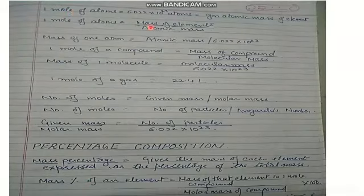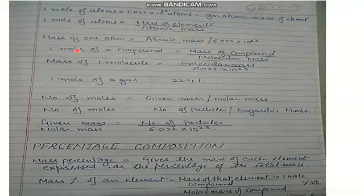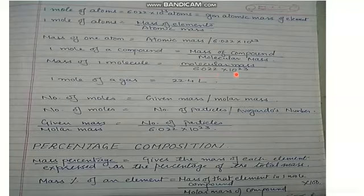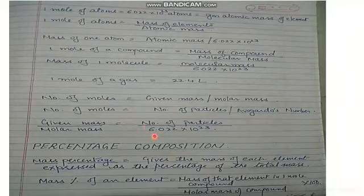1 mole of atoms = 6.022 × 10²³ atoms = gram atomic mass of that element. So, moles of an element = mass of element / atomic mass, and mass of 1 atom = atomic mass / (6.022 × 10²³). 1 mole of a compound: moles = mass of compound / molecular mass, and mass of 1 molecule = molecular mass / (6.022 × 10²³). For gases, 1 mole = 22.4 liters. Number of moles = given mass / molar mass = number of particles / Avogadro's number, i.e., given mass / molar mass = number of particles / (6.022 × 10²³).